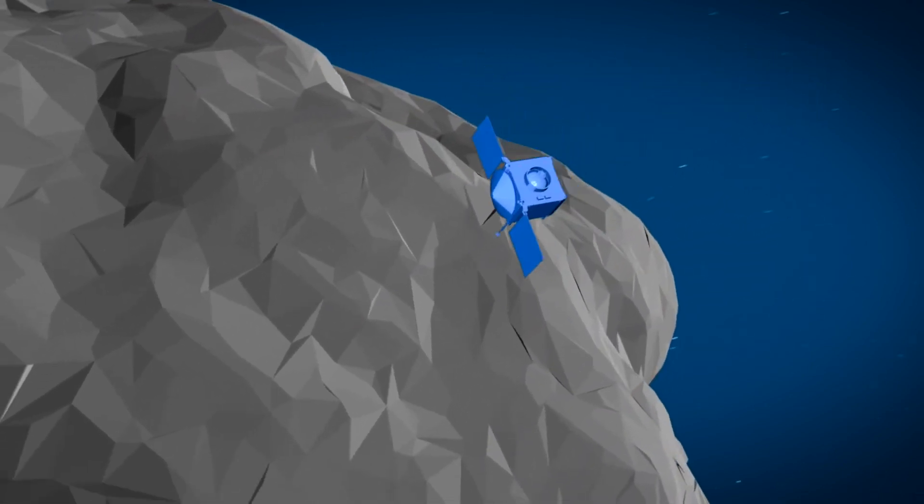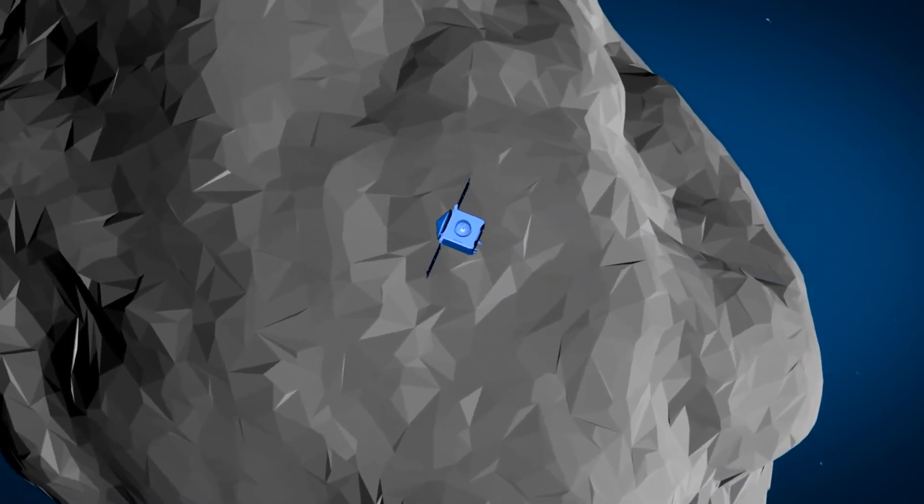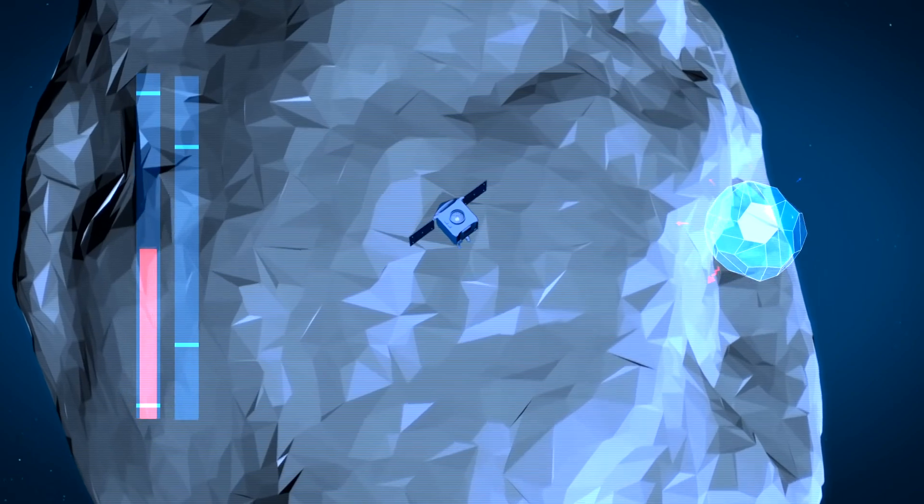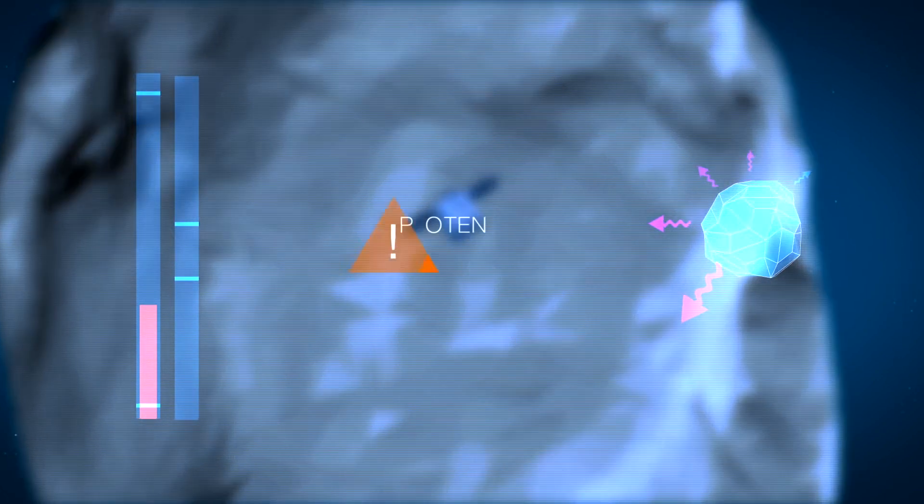By studying the Yarkovsky effect on Bennu with the OSIRIS-REx spacecraft, NASA scientists hope to better predict how an asteroid might move through the solar system, and whether it poses any danger to us here on Earth.